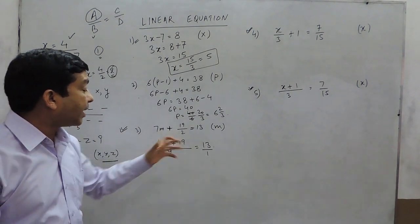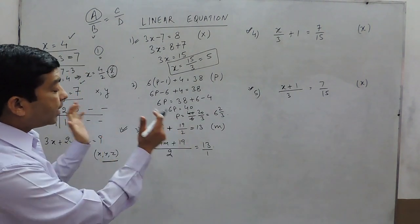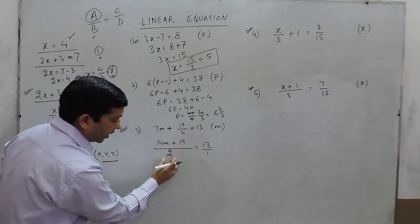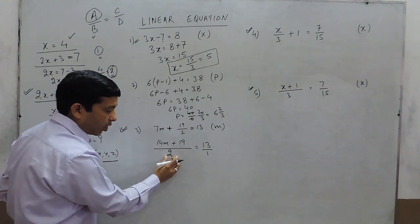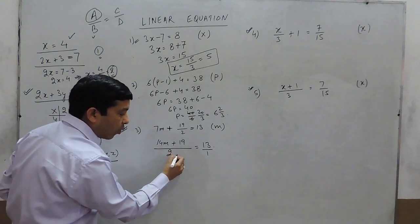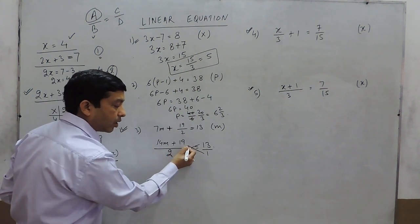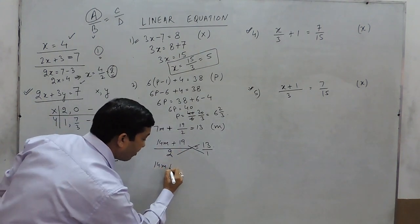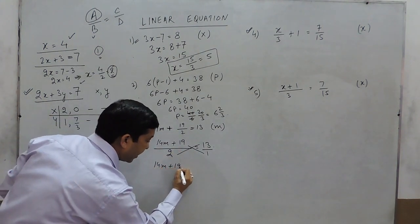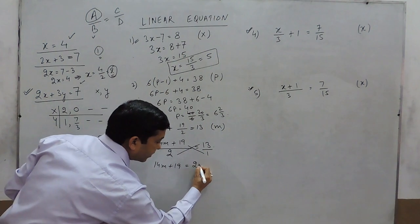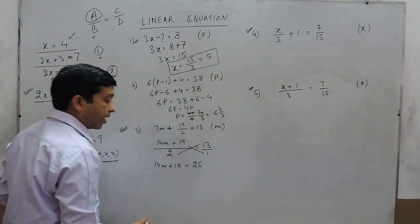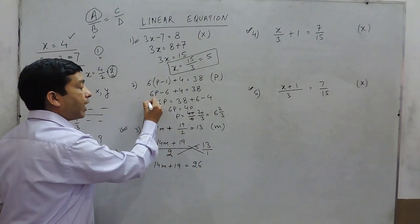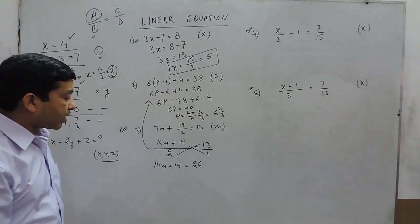As I mentioned, in the numerator there should be only one polynomial and in the denominator also only one polynomial. Now we can cross multiply the two, so this gives 14m plus 19 equals 26. This has now been converted into a simpler equation.